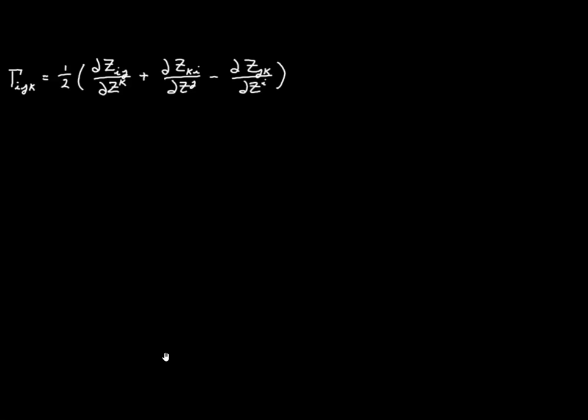Here we have the formula we derived in the last video for the Christoffel symbol of the first kind. In Cartesian coordinates, the covariant metric tensor is made up of constants — it's just the identity matrix. So all the partial derivatives of that tensor are going to be zero, meaning all of the Christoffel symbols are equal to zero.